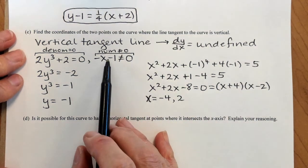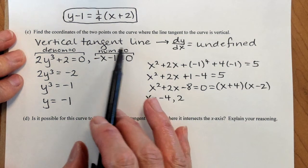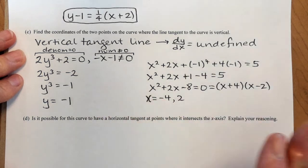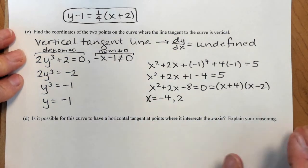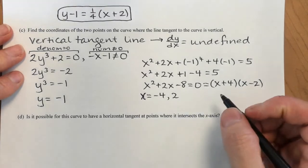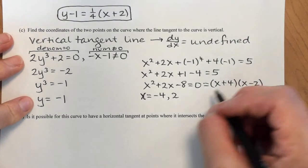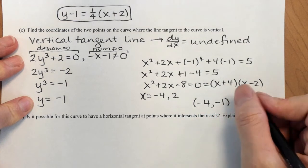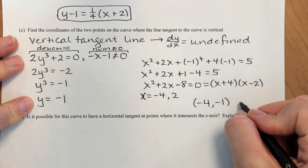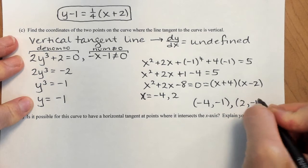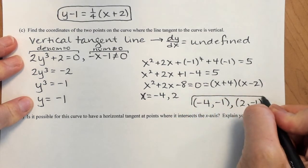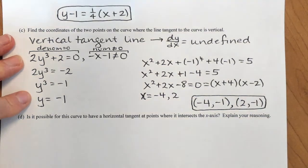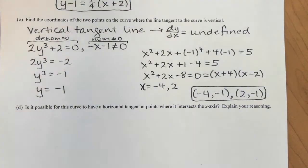I'll confirm that neither x value makes the numerator equal 0 — we are safe, the numerator does not equal 0 in those cases. So the two points are negative 4, negative 1 and 2, negative 1: the two points on the curve where the tangent line is vertical because its slope is undefined.